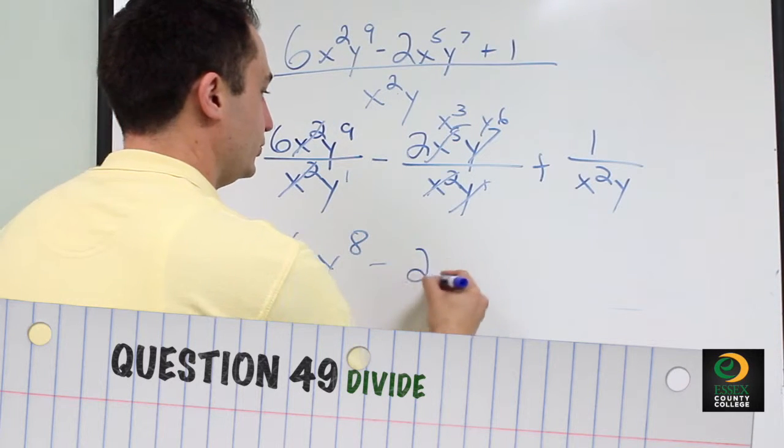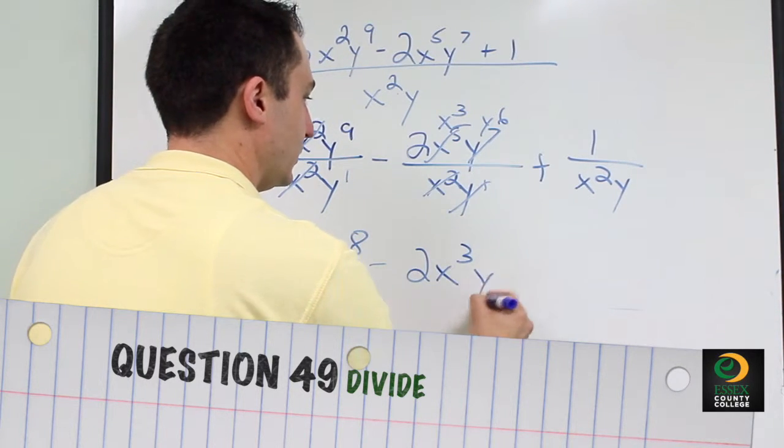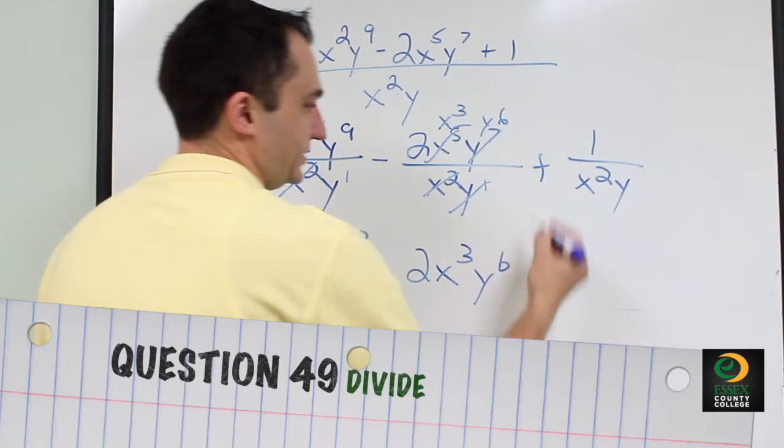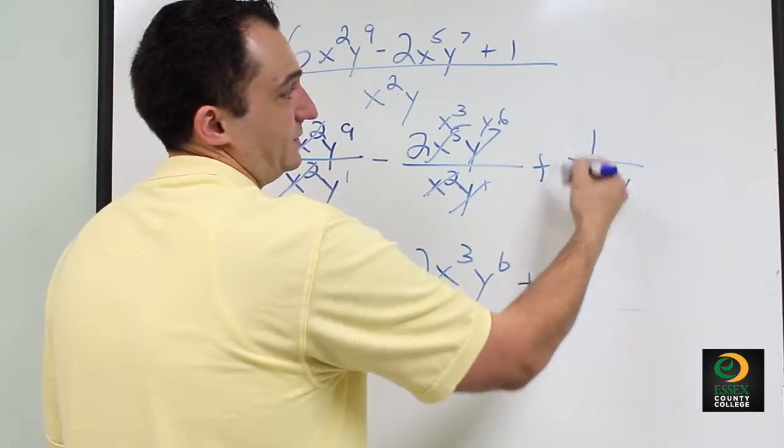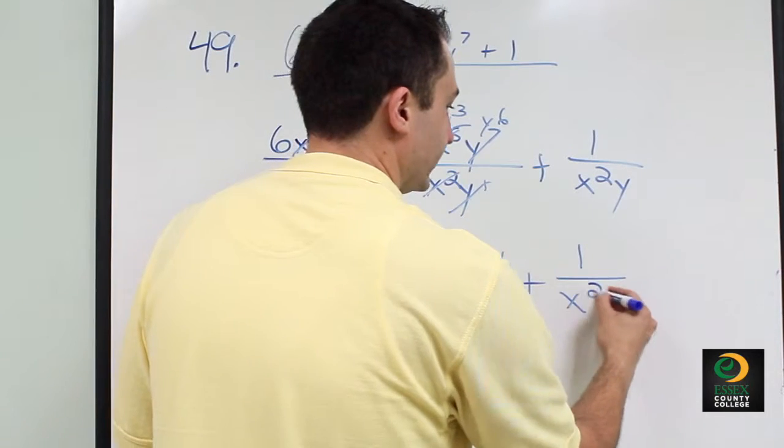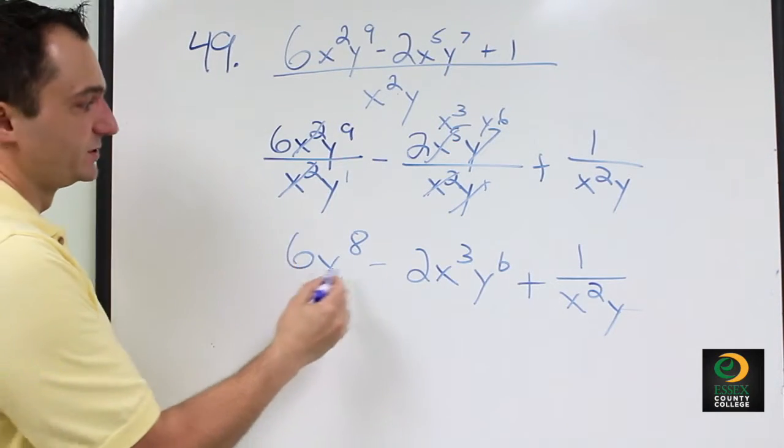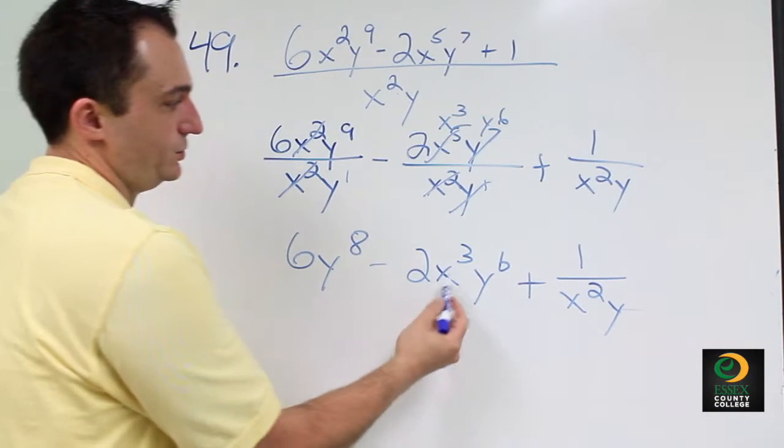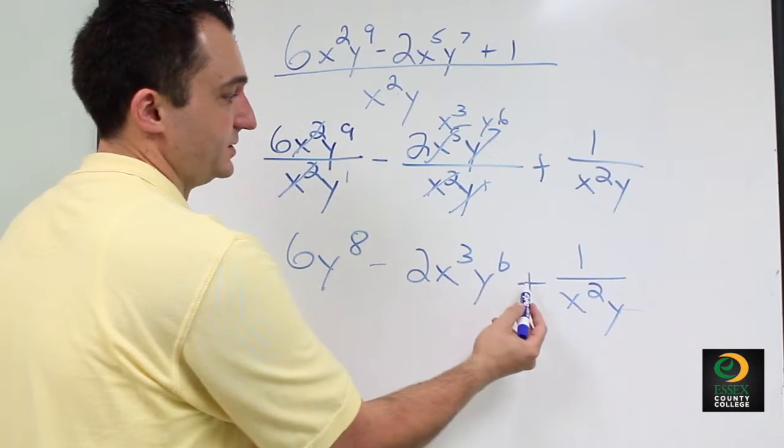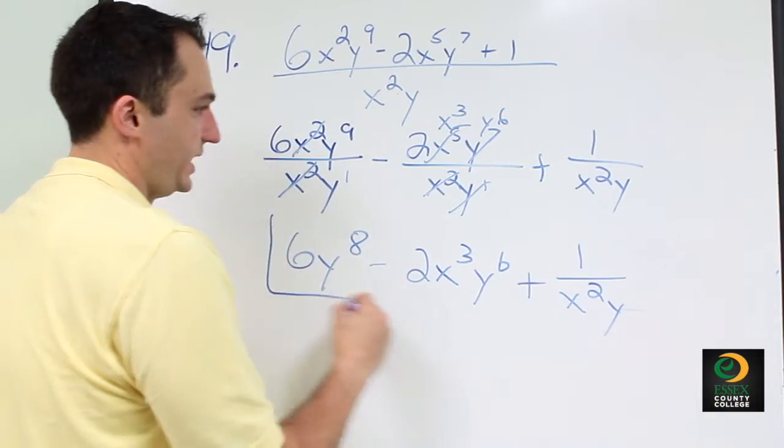So we're left with 2x3 y to the 6th plus, and we can't simplify this at all, so we just rewrite it, 1 over x squared y. So your final answer for number 49 will be 6y to the 8th minus 2x to the 3rd y to the 6th plus 1 over x squared y.